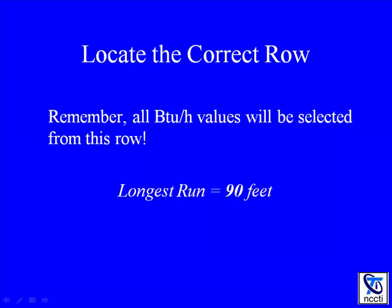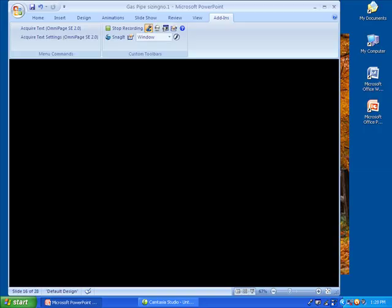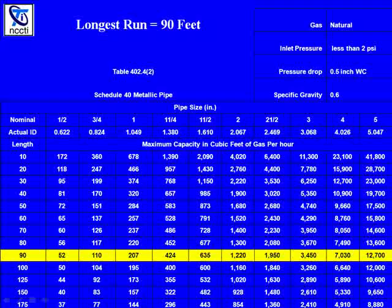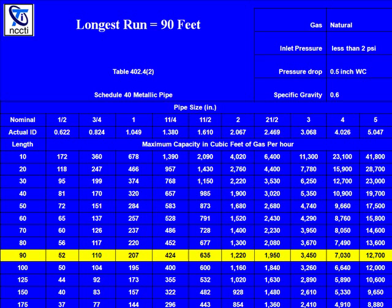It is now time to size all the gas piping lines in this lesson. Our longest run is 90 feet. Just remember, all BTUs per hour values will be selected from this row. Here is where the longest run — 90 feet — is applied to the table. I have the 90 foot row highlighted. The main thing to remember: once you determine the longest run, you never leave that row. You size all your pipe in the system from this row.